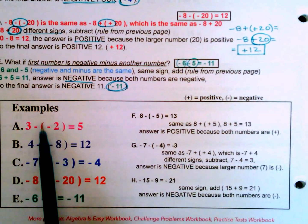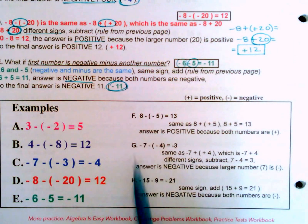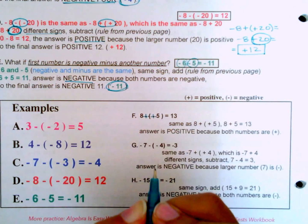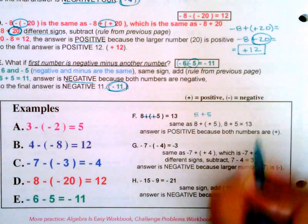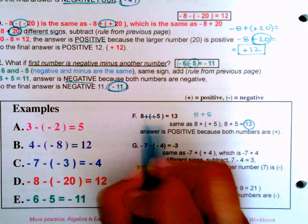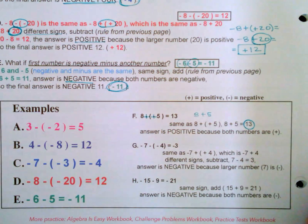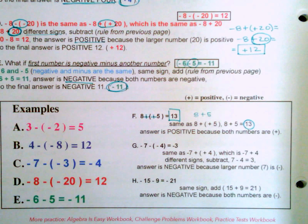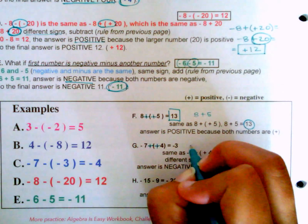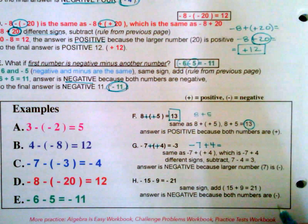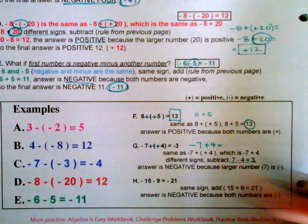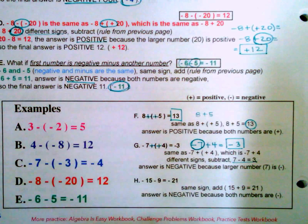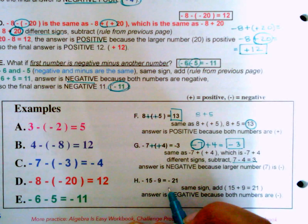Now let's look at examples F, G, and H. F: eight minus negative five — those immediately become plus signs, so that's just eight plus five which equals thirteen. Both numbers are positive so the answer is positive thirteen. G: negative seven minus negative four — we turn both into positives, so it's negative seven plus four. Different signs, so we subtract: seven minus four is three, and the larger number is negative, so the answer is negative three.